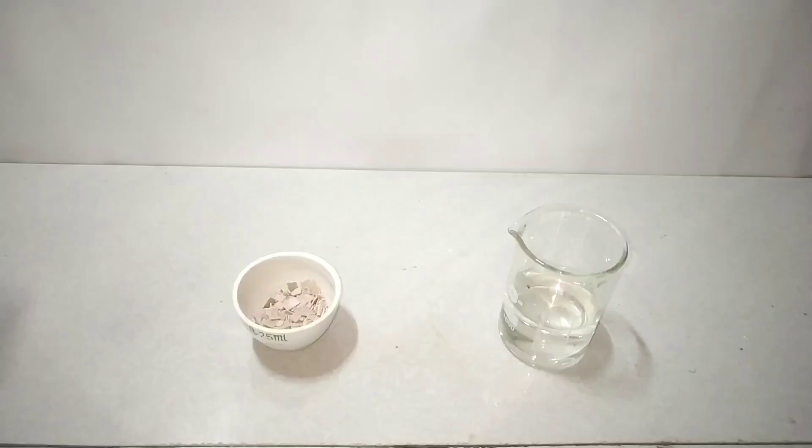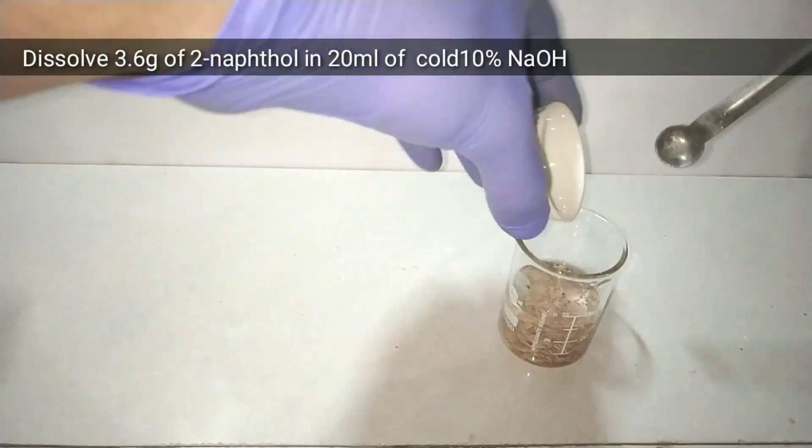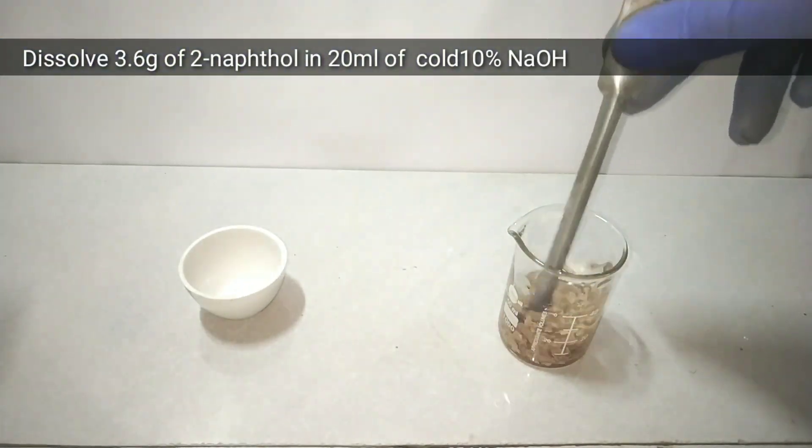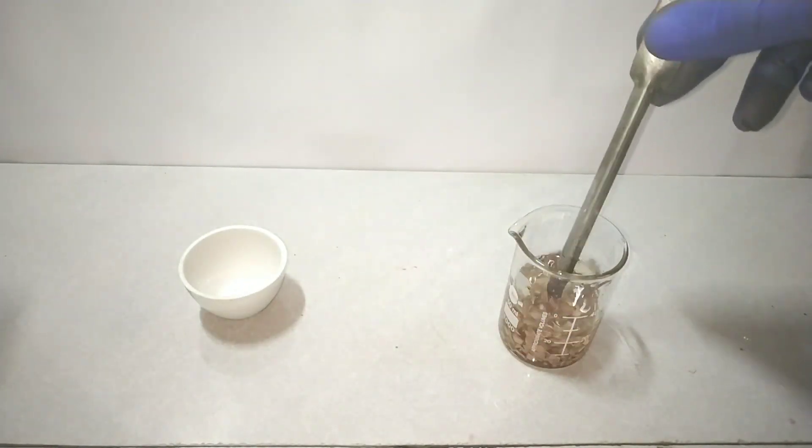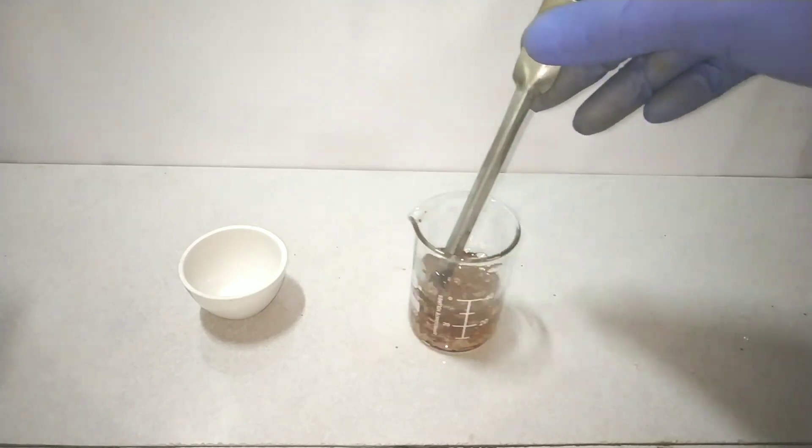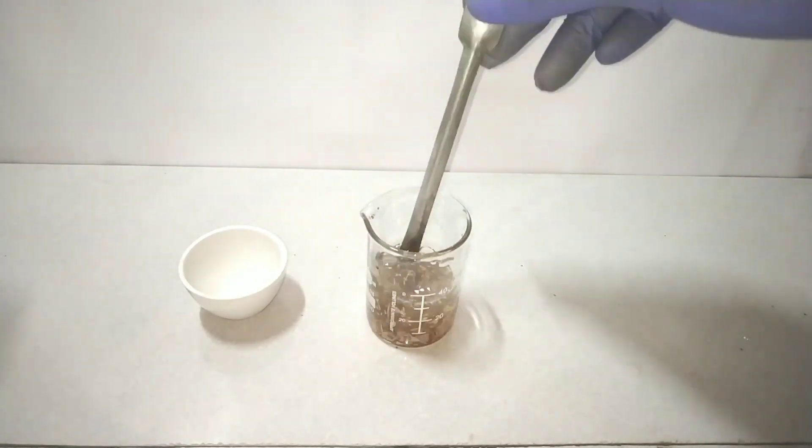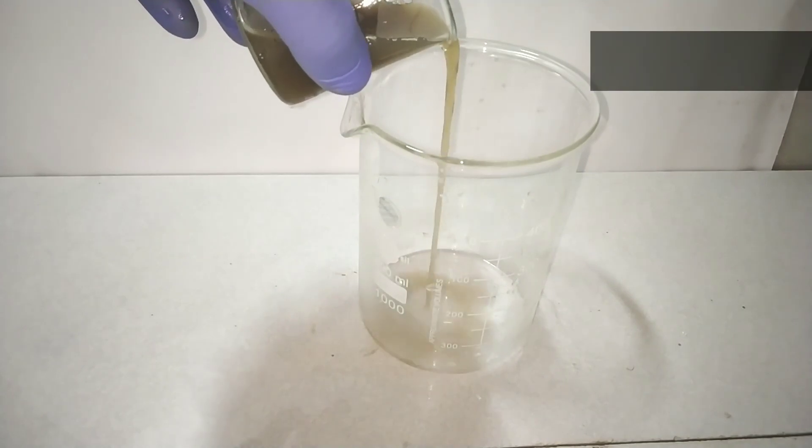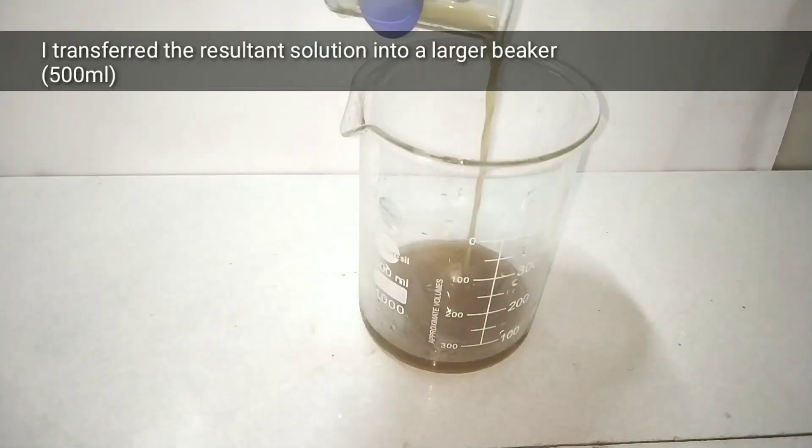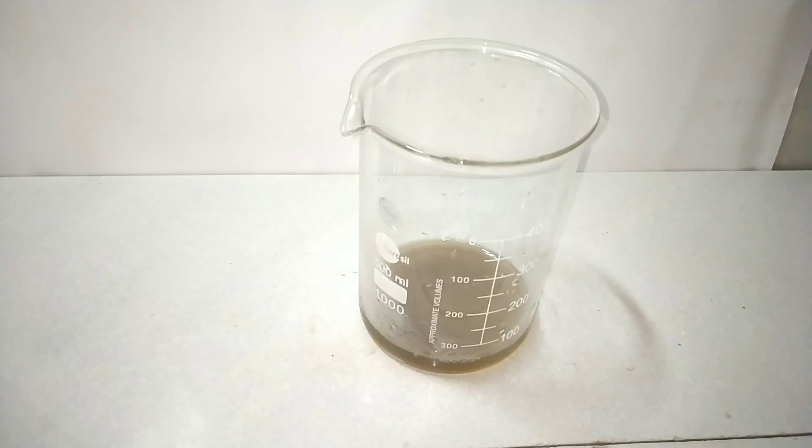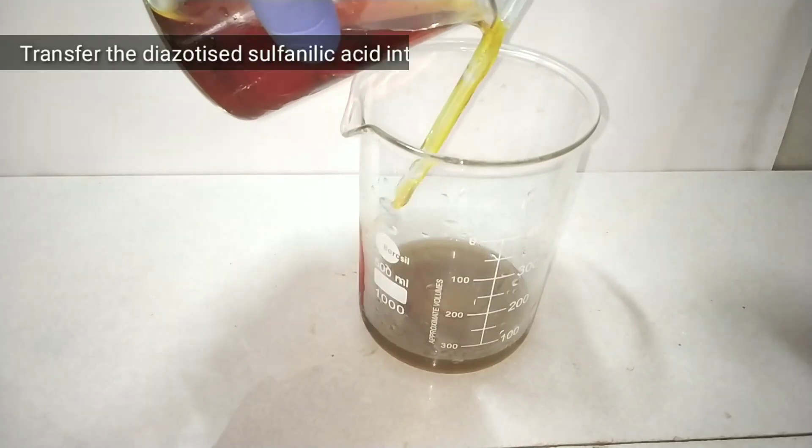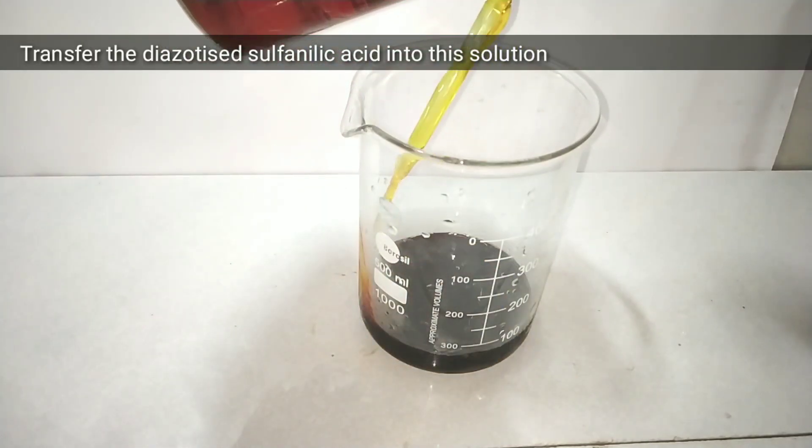So we have completed the diazotization and now we move on to coupling. For that we have already measured out 3.6 grams of 2-naphthol which we are mixing in 20 ml of 40% sodium hydroxide. 2-naphthol is slightly soluble in water but dissolves readily in alkaline solution because it is a weak acid. The sodium hydroxide also helps to neutralize the acidic byproducts of the reaction.